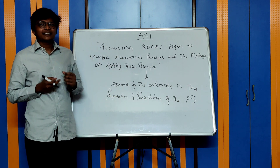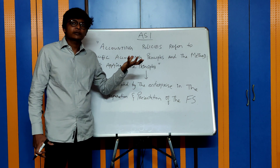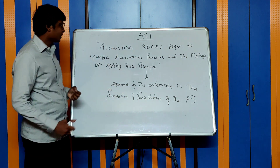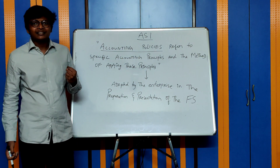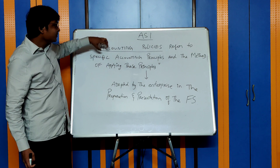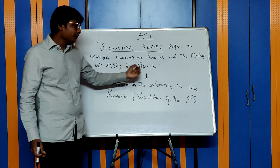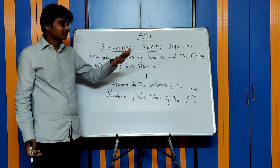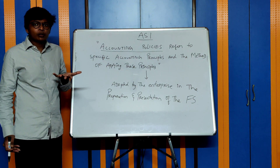Hi everyone, welcome to the CI classroom. Today we'll be discussing AS1. AS1 is one of the smallest standards but conceptually very important to understand. AS1 talks about accounting policies. Accounting policies are defined as specific accounting principles and the method of applying those principles adopted by the enterprise in preparation and presentation of financial statements. This definition is very important to memorize.